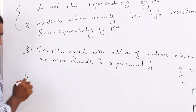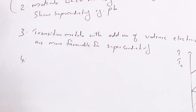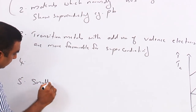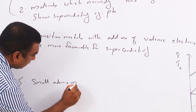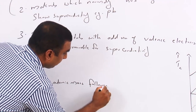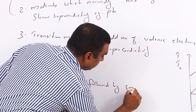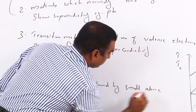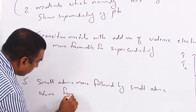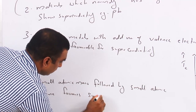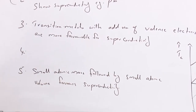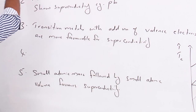Fifth, small atomic mass followed by small atomic volume favors superconductivity. These are the five points we should remember, and they are also called Matthias rules.